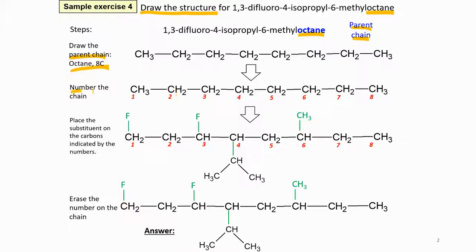Then after that you number the chain. You can start from left or you can start from right. Either one is correct. Then let's say we start from the left hand side. We have fluorine, one, three and it is written here di. Difluoro means there are two fluorine at carbon number one and number three. So put it attached to the carbon.